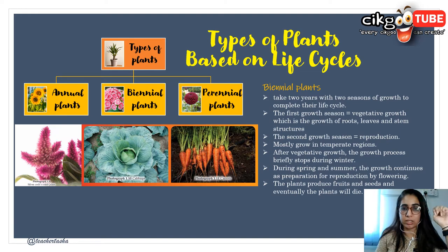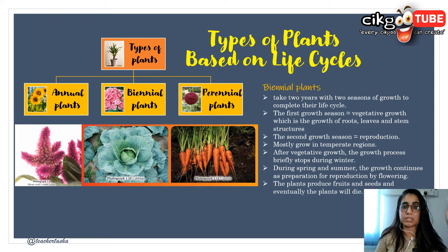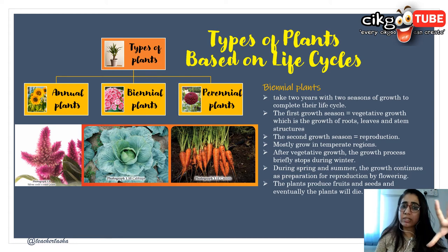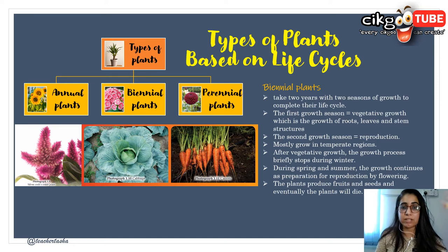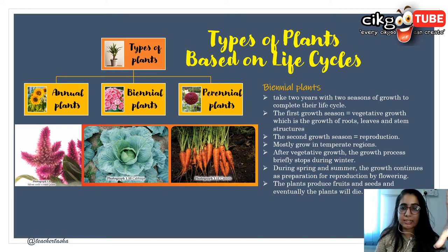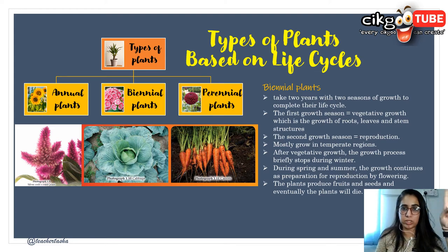Biennial plants take two years with two seasons of growth to complete their life cycle. The first growth season is for vegetative growth — roots, leaves, and stem structures. The second growth season is for reproduction. They mostly grow in temperate regions. After vegetative growth, the growth process briefly stops during winter, but during spring and summer growth continues as preparation for reproduction by flowering, after which the plants produce fruits and seeds, then die. This process takes about two years.